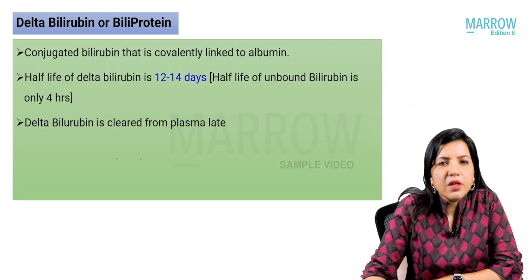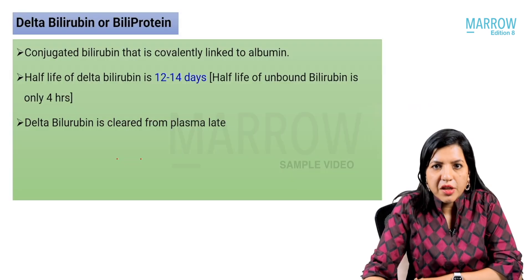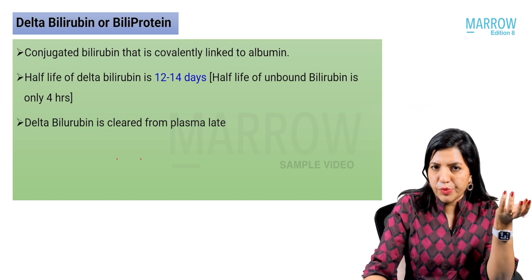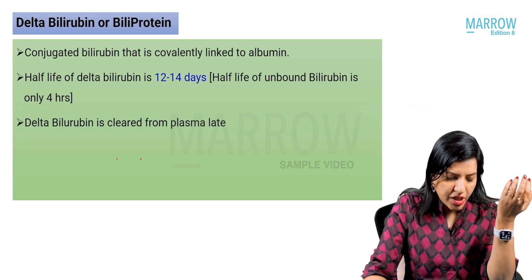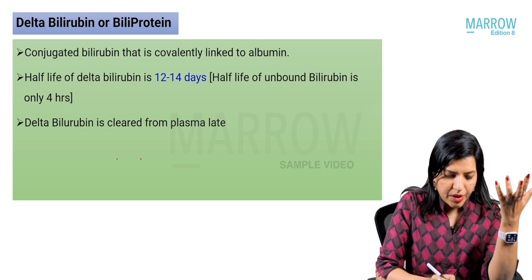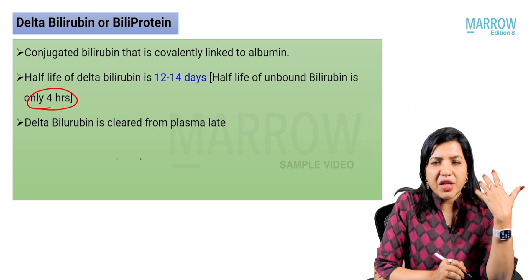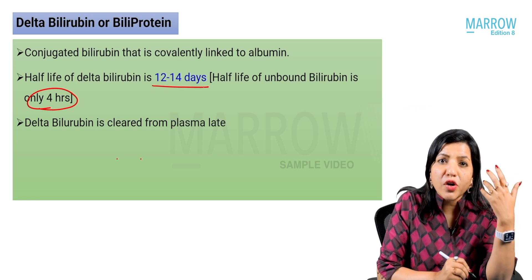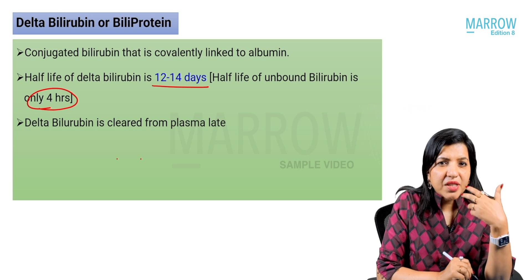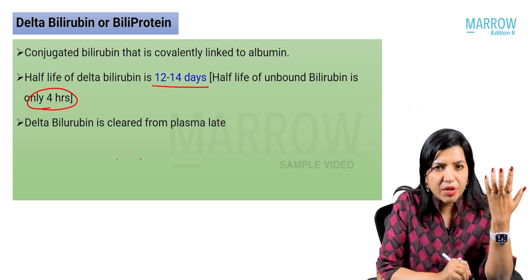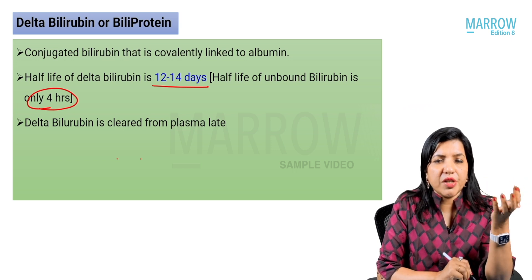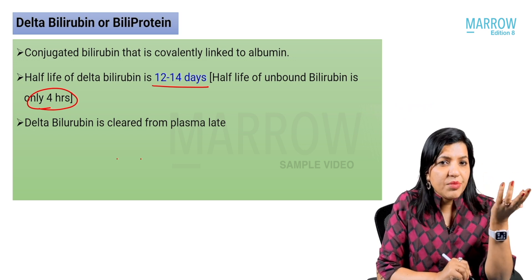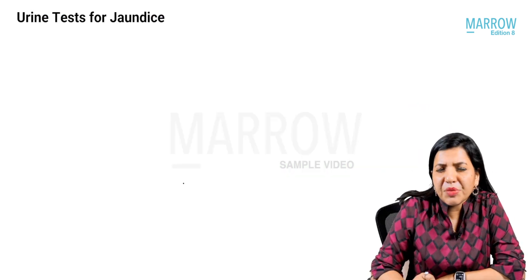Delta bilirubin, also called biliprotein, is conjugated bilirubin covalently linked to albumin. Normally, conjugated bilirubin has a half-life of only four hours, but when bound to albumin its half-life extends to 12–14 days. This means delta bilirubin is cleared from plasma much later than unbound conjugated bilirubin, which is its key clinical significance.